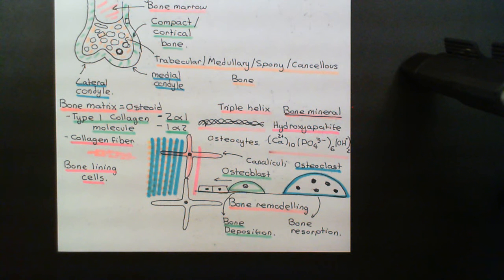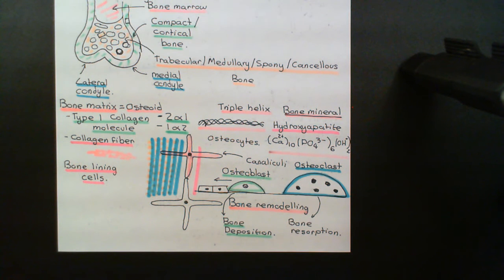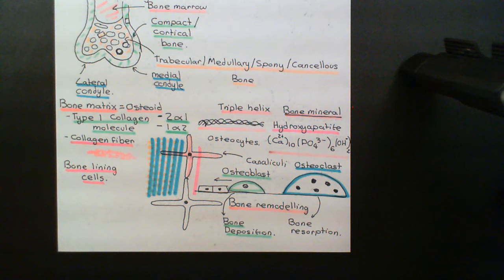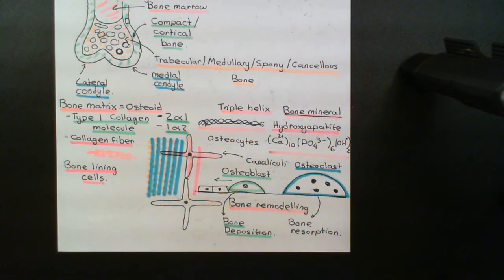This is done in a way that you wouldn't predict if you were trying to design it yourself. Parathyroid hormone and 1,25-dihydroxyvitamin D actually increase osteoclast activity by acting on osteoblasts. They basically get the osteoblasts to tell osteoclasts to increase their activity.